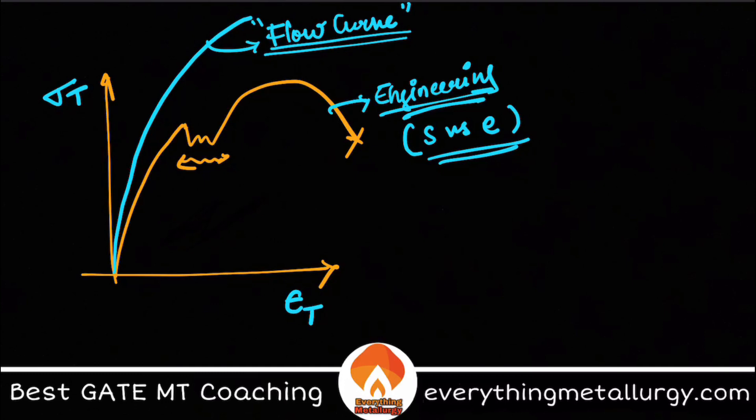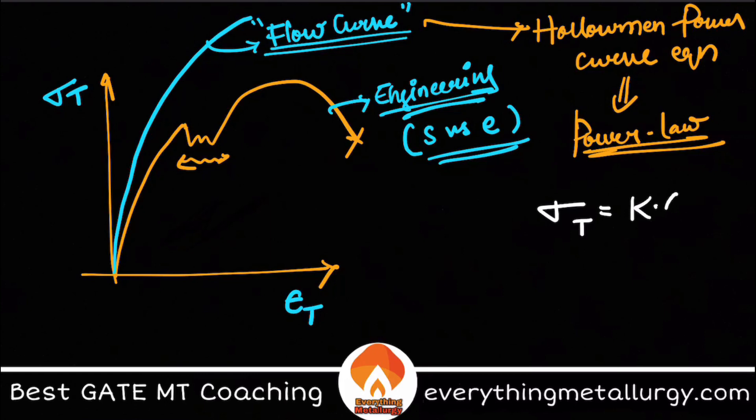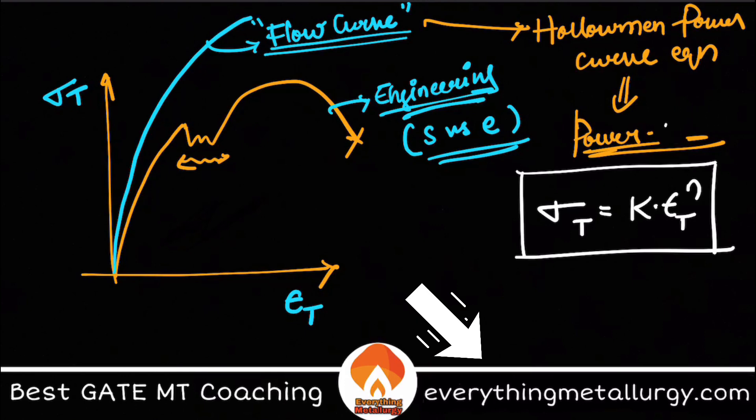This is my flow curve and it is governed by an equation called the Hollomon power curve equation, or power law. Hollomon's equation will look like this: sigma t equals k times epsilon t to the power n. Here you have two different terms, k and n, which are new. K is usually a coefficient called strength coefficient.